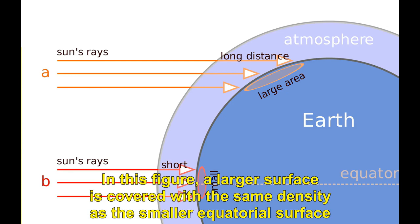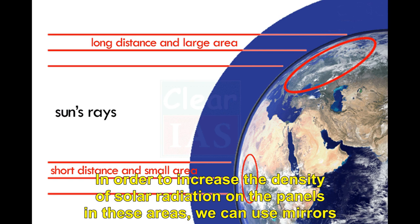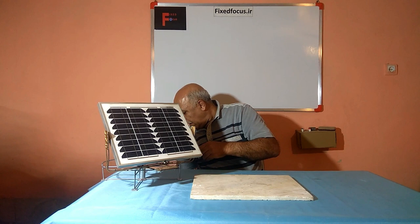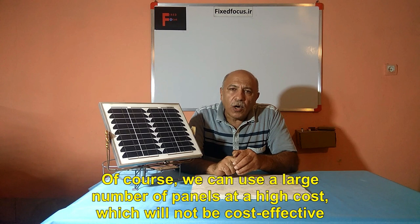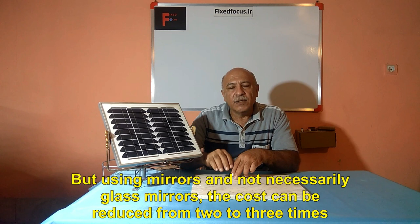In this figure, a larger surface is covered with the same density as the smaller equatorial surface. In order to increase the density of solar radiation on the panels in these areas, we can use mirrors. We could also use a large number of panels at a high cost, which would not be cost-effective. But using mirrors — and not necessarily glass mirrors — the cost can be reduced by two to three times.